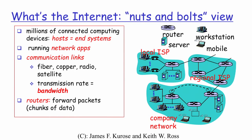So what exactly is an internet? From the components point of view, it is basically a mechanism by which different kinds of devices are connected, and the number of devices could run into many millions. These devices are referred to as hosts or end systems — both terms mean one and the same. The host or end systems will actually be running the applications, what we refer to as network applications.